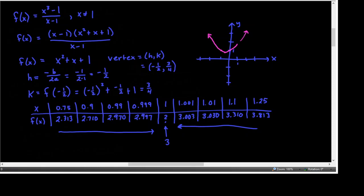The closer we get to 1, the closer our answer gets to 3 — which I didn't do a great job of graphing. It should be up at 3. Let me fix that because this graph needs to be a little better looking. I'll make it look a whole lot better. So this curve goes more like this. This side does pretty much the same idea because of the symmetry of that function.